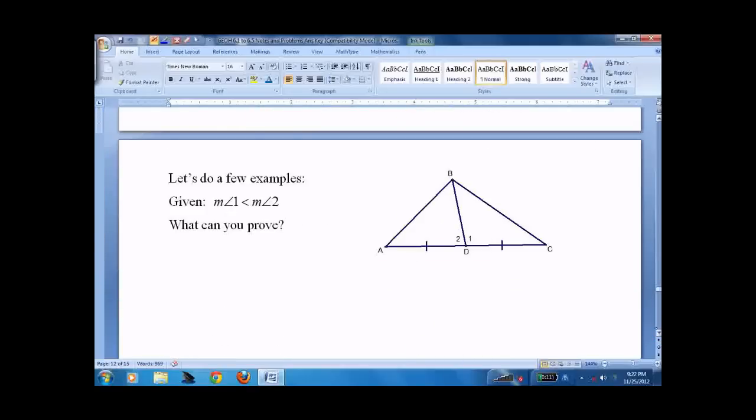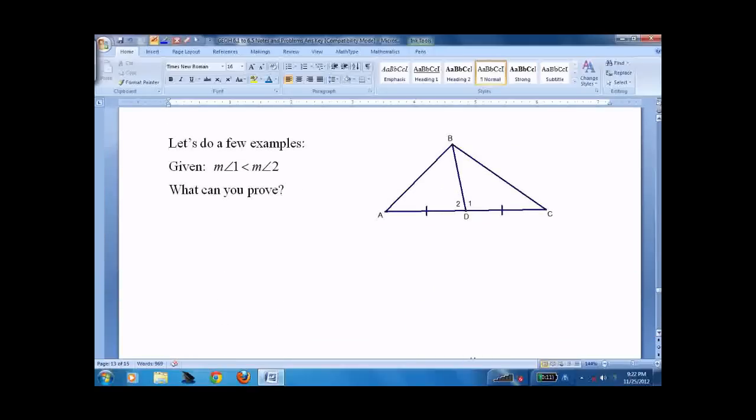Here's two problems for you to try. I'd pause the recording and see if you could do it. I'm going to do it for you. We know these are congruent. If we look at this triangle and then this triangle and compare them, I know angle one is smaller. Angle one is greater than measure of angle two. Then I can say that BC is greater than AB by side angle side inequality.